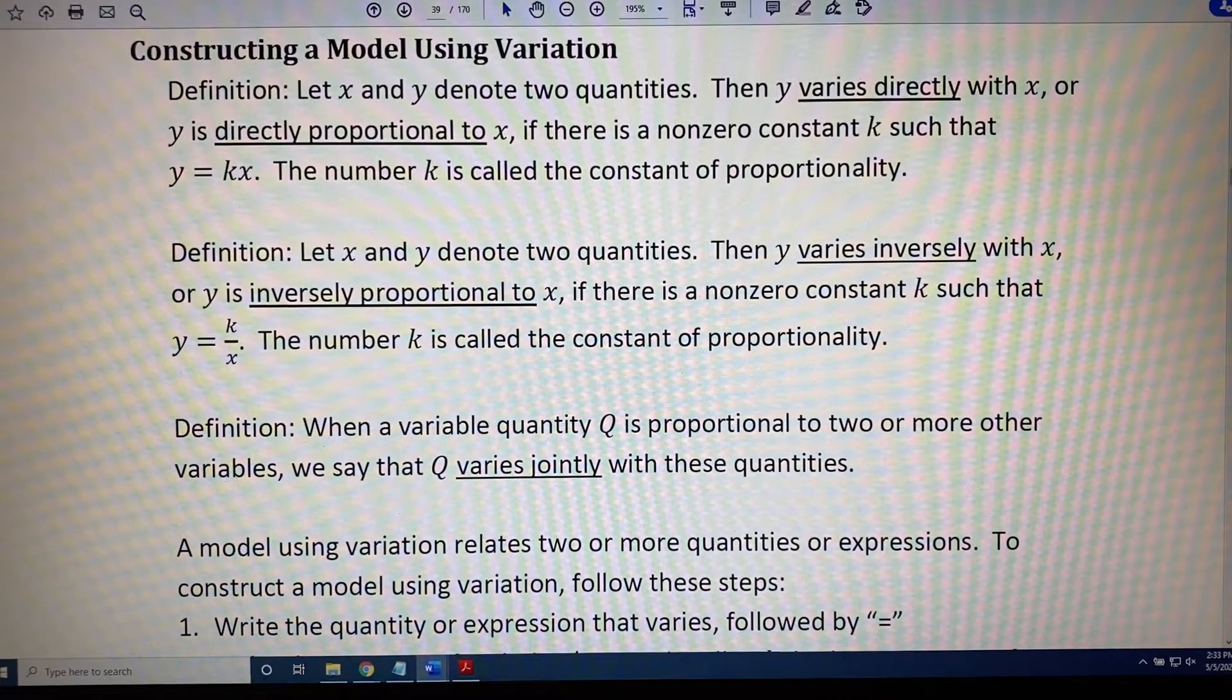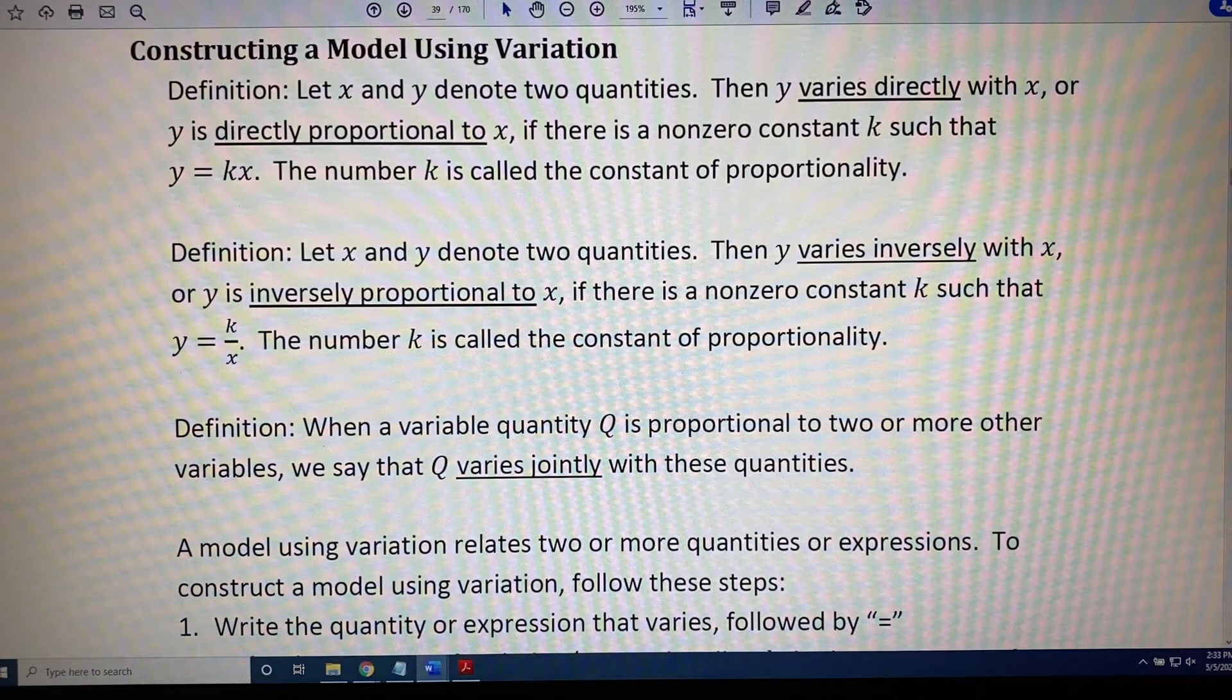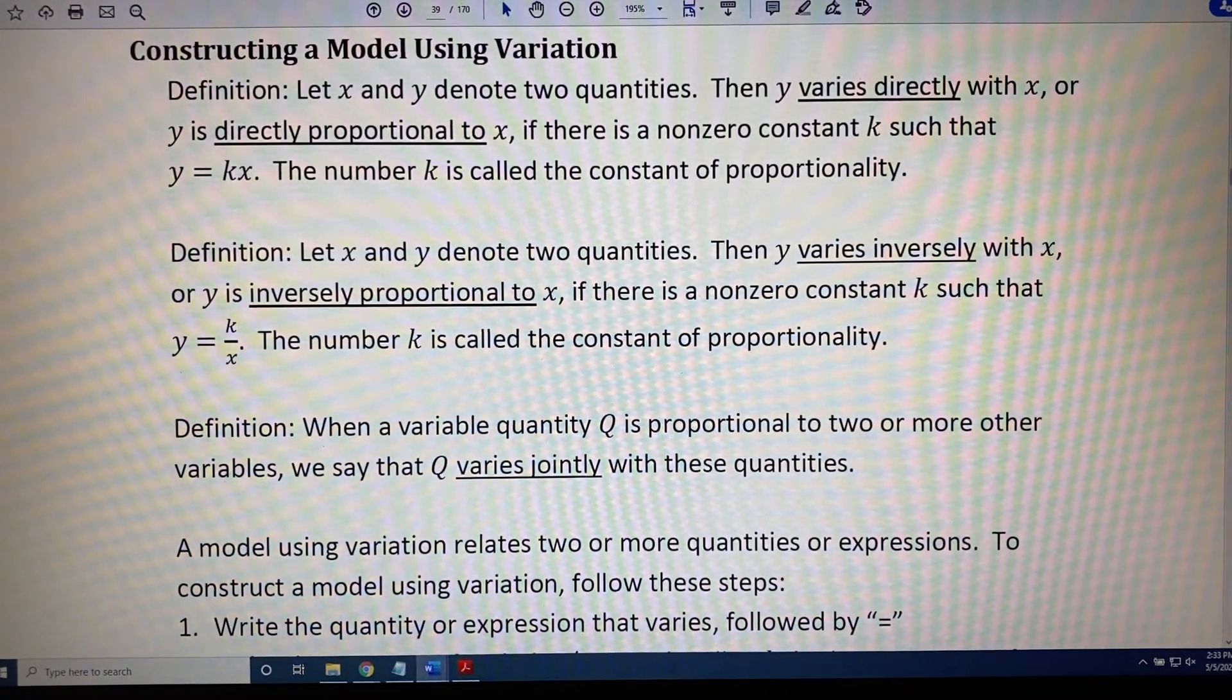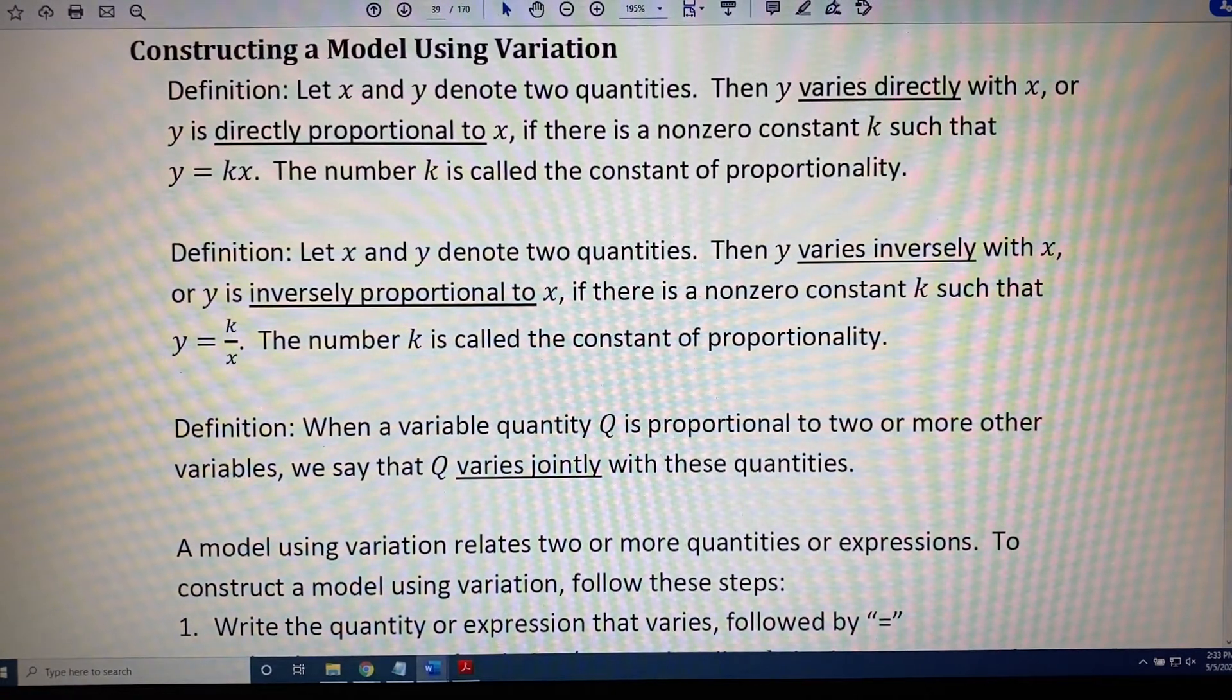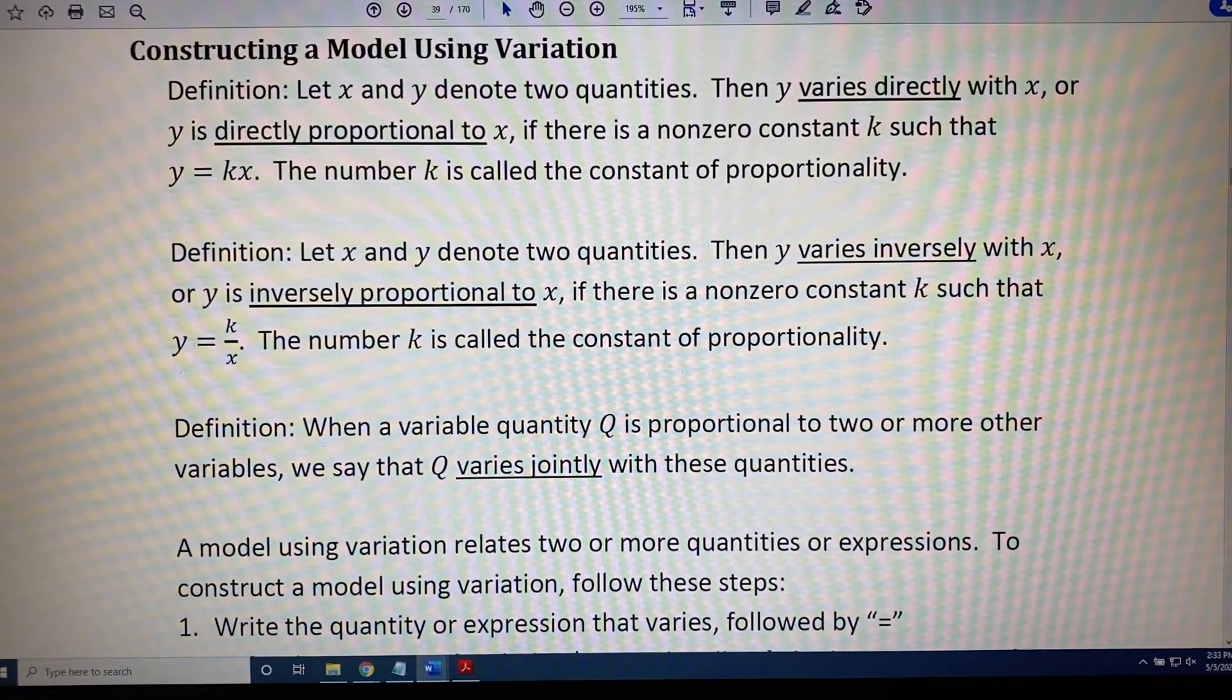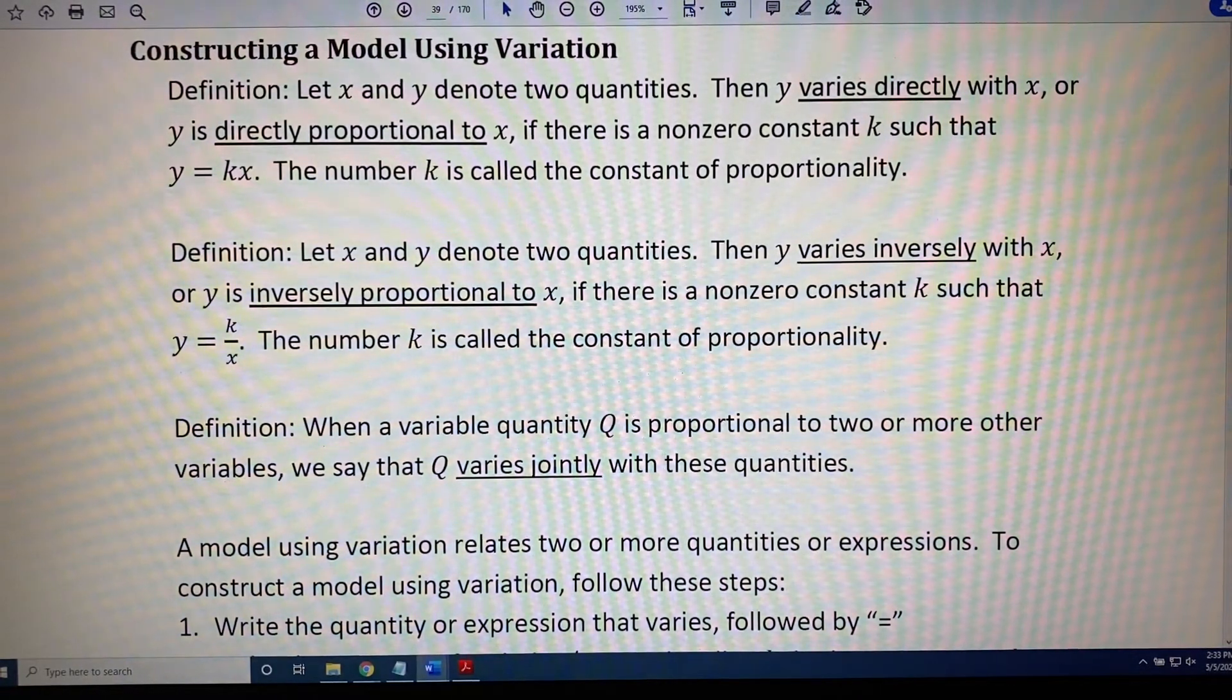Let's talk about how we might see something like this in the real world. First of all, when we say that x and y denote quantities, those are things in the world that we can measure with numbers. For example, y might be the amount of money that we spend. We can measure that with a number. And x might be the number of bags of potato chips that we purchase. We can measure that with a number.